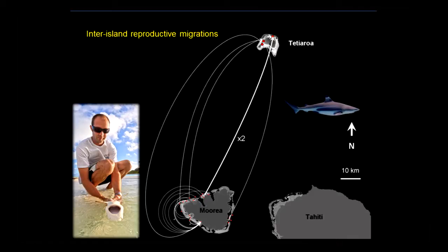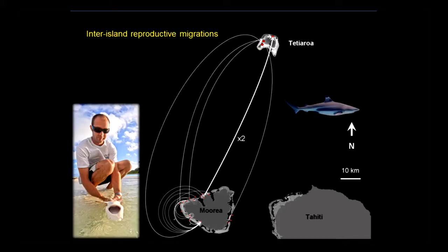More interestingly, we were able to show that some females cross the open water — an area with about 2,000 meters of deep water — and go to lay their pups in Tiahura. That was quite a surprise, especially because we knew those populations were genetically differentiated. Furthermore, the same female did this two consecutive years, going back to that same place. We suspect there may be philopatric processes, similar to what's been suggested for turtles and salmon — they return to where they were born.